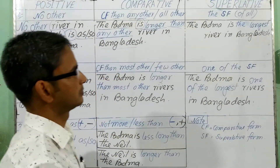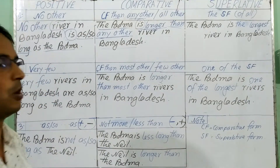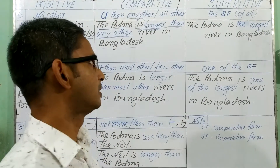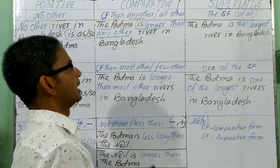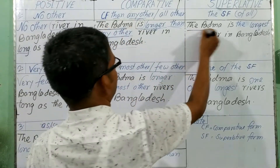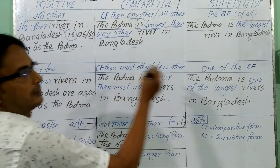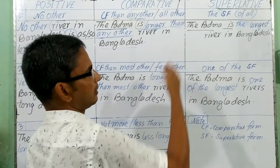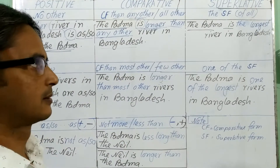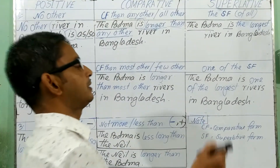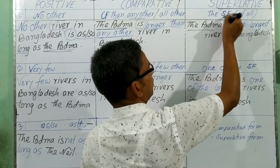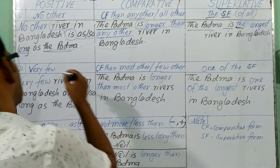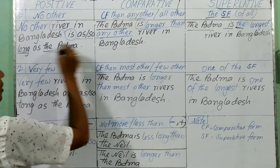It is the comparative form. Then let's go to the next sentence — changing it to the superlative form. You write the same subject, 'the Padma,' then the verb 'is.' The Padma is a singular noun, so you have to use 'is.' Before the superlative form you have to use 'the,' then the superlative form — 'longest' is the superlative form of 'long' or 'longer.'